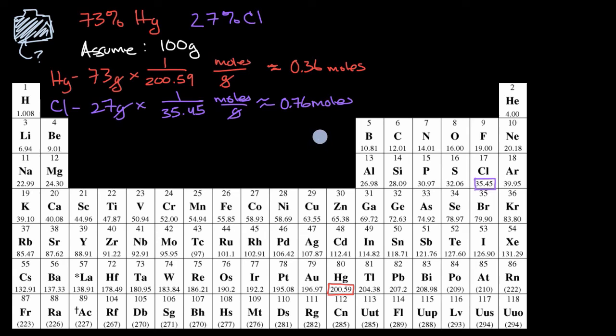And so if we assume a ratio of two chlorine atoms for every one mercury atom, the likely empirical formula is, for every mercury atom, we will have two chlorines.